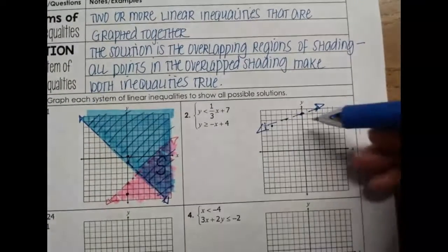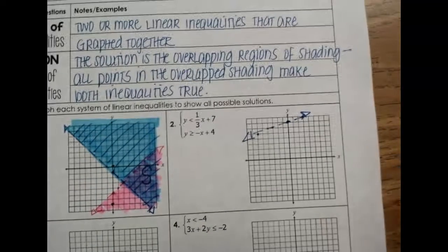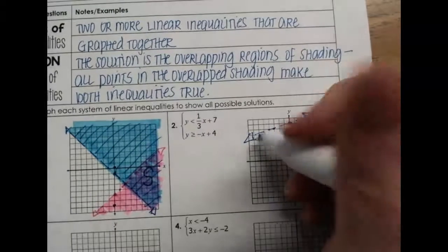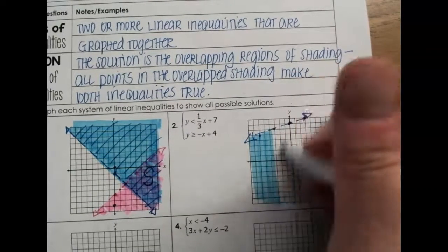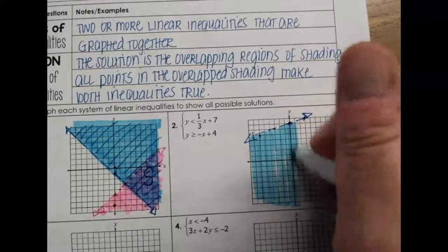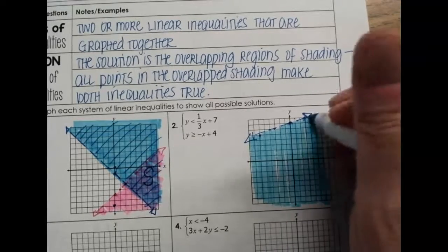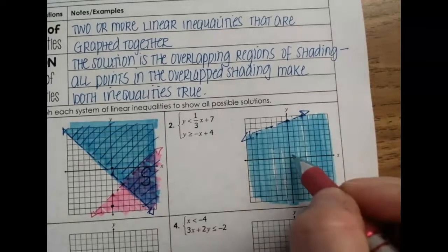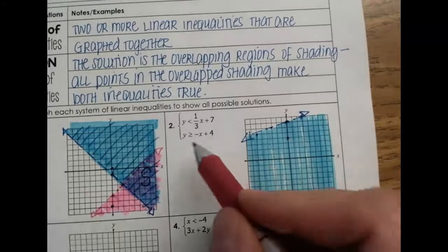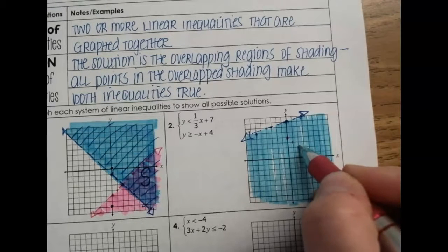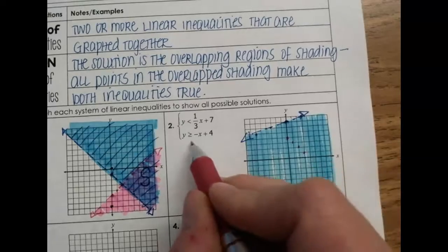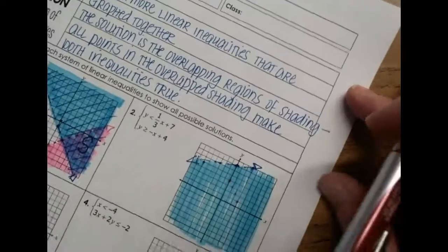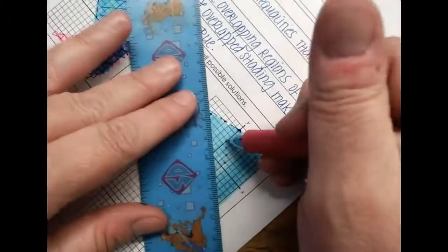It says y values are less than the line, so less than is below the line — I am going to shade everything below it. Now for the second inequality: we start at positive 4, and the slope is negative 1, meaning go down 1, right 1. This one does have an equal sign, so instead of a dotted line, this line is going to be solid.